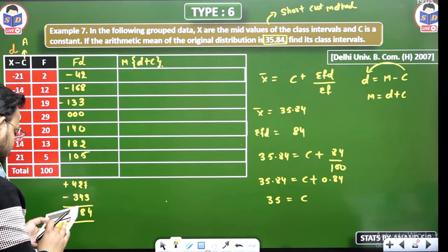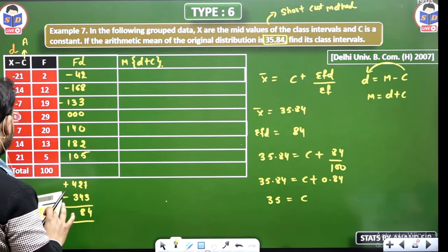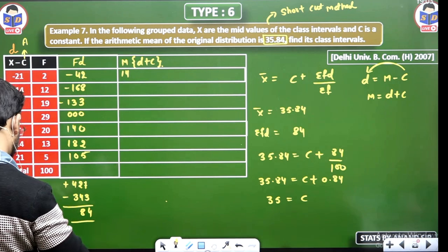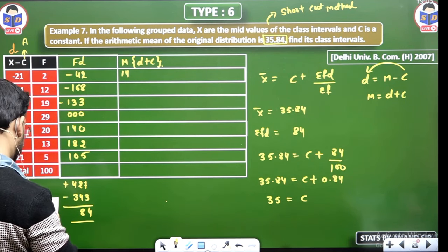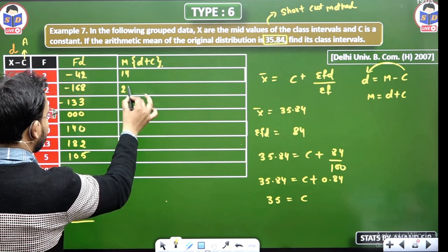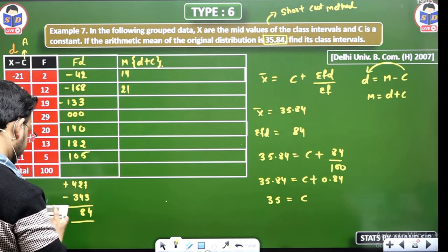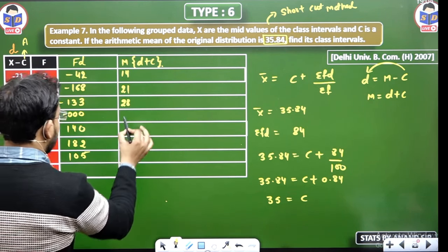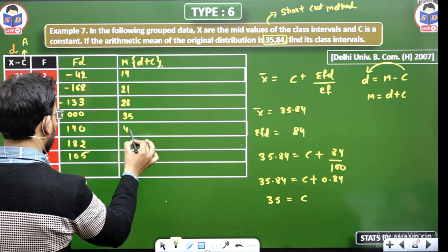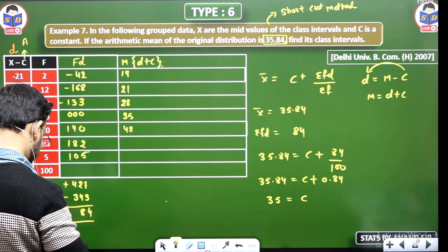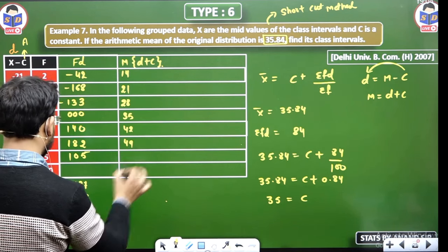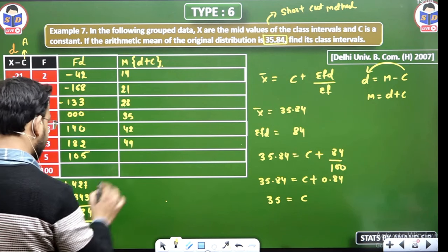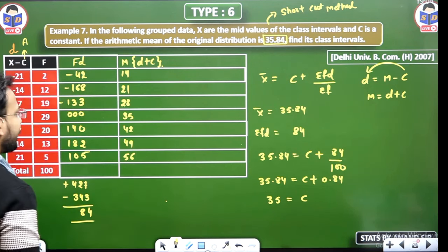We will do this here. 35 plus 14. 21, 35. 28, 35. 35 or 7, 42. 35 or 14, 35 plus 14, 49. 35 plus 21, 56. So mid value comes out.